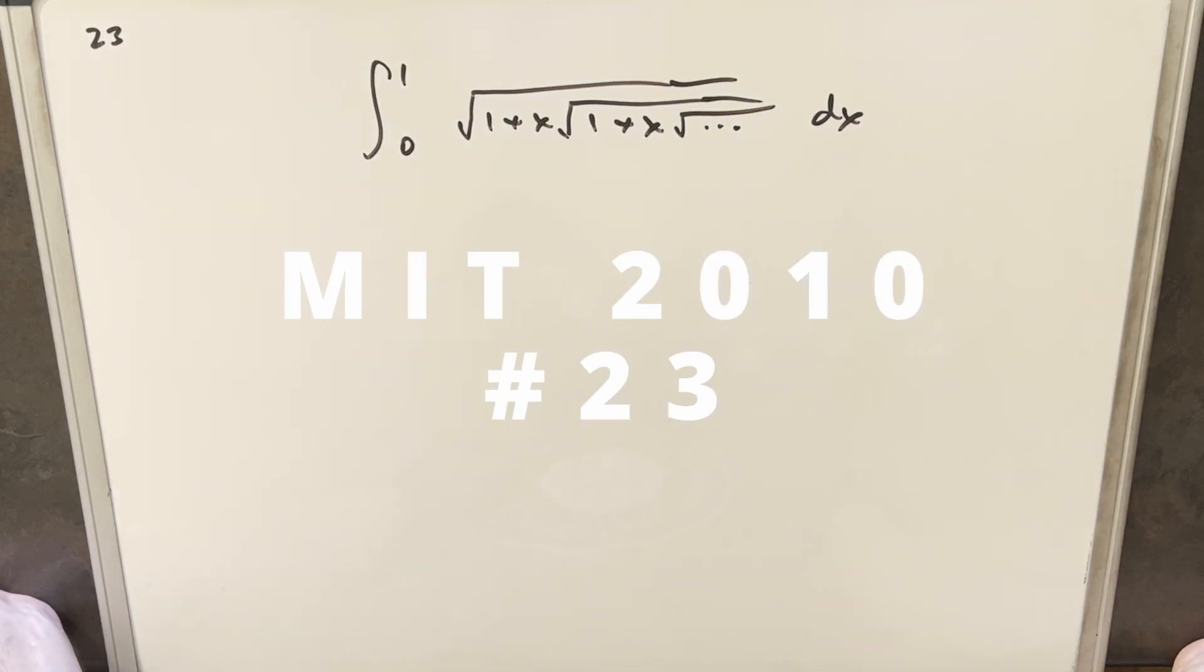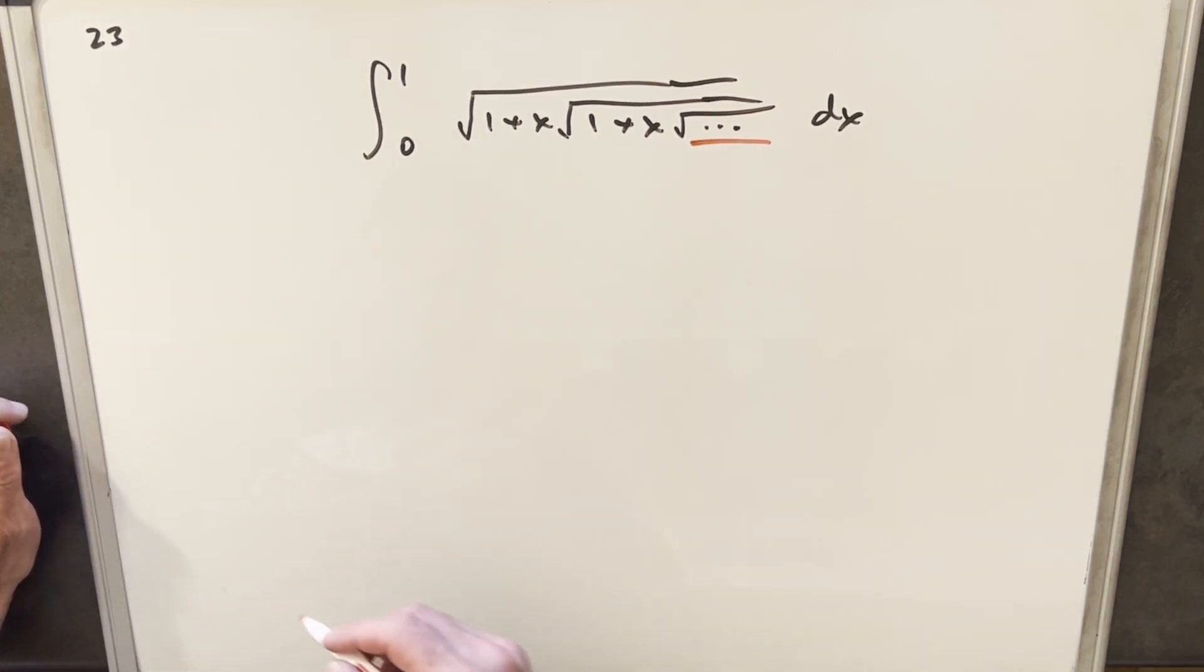We have here another integral today. This one was really interesting. This is from MIT Integration B 2010, problem 23. You have this integral from zero to one with this infinitely nested radical. I'm not sure how to pronounce all this, but notice this continues forever here. These can be a little intimidating at first because it's hard to picture everything going on there.